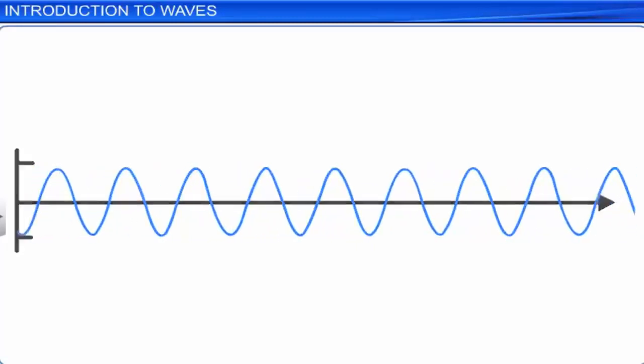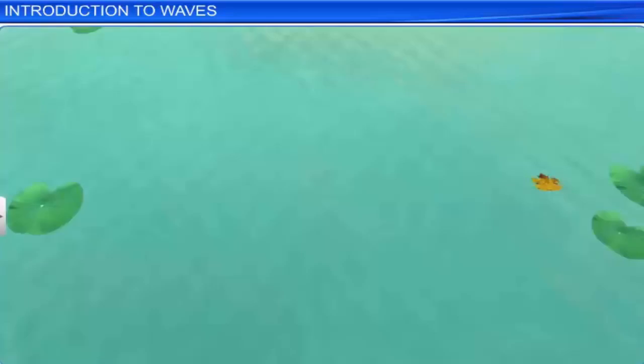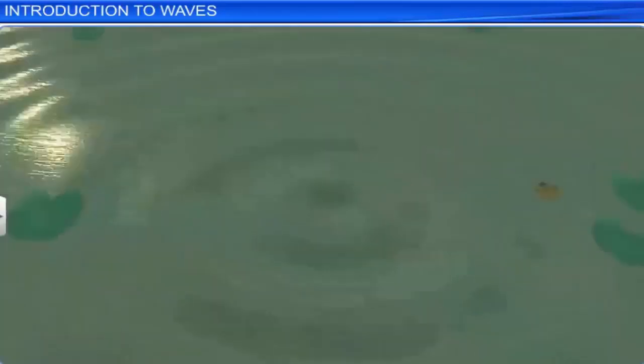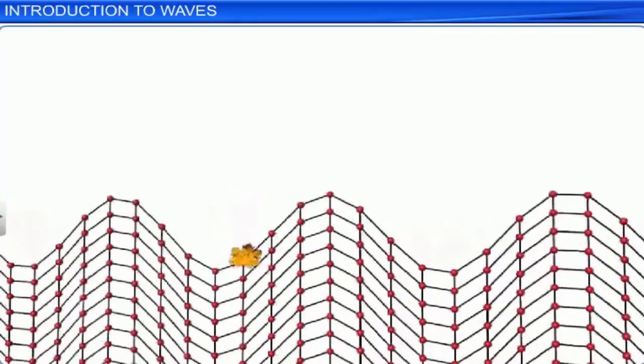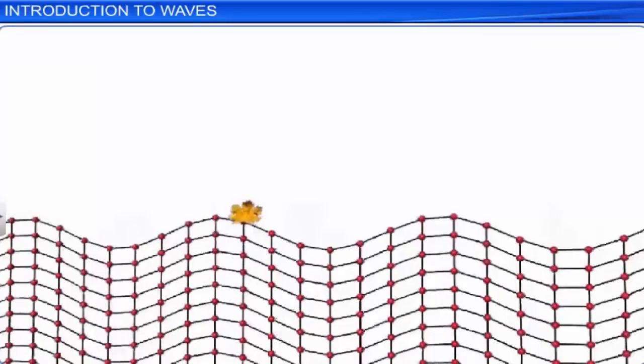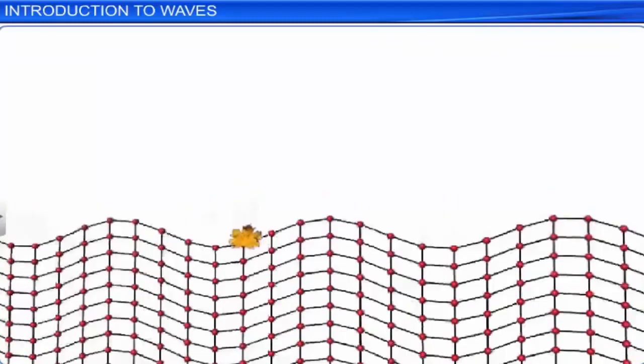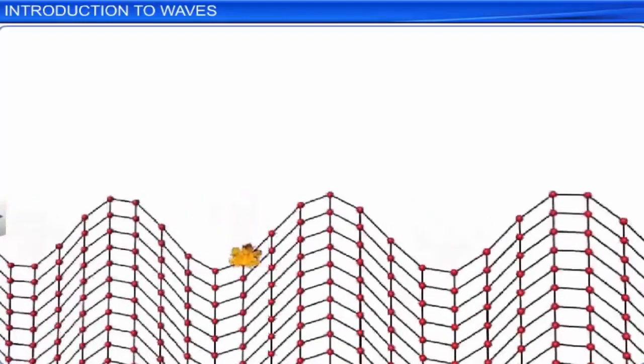Let us consider an example where a pebble is thrown into a pond of still water. We see ripples formed at the place where the pebble touches the surface of the water and move outward in circles. A dry leaf on the surface of the water is seen moving up and down in its place. This shows that the water does not move along with the wave. This disturbance in the medium, that is water, is transmitted from particle to particle. This is due to the elastic forces binding them.